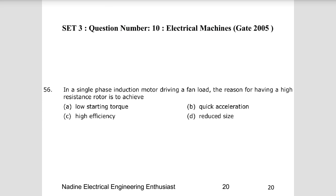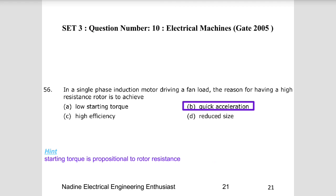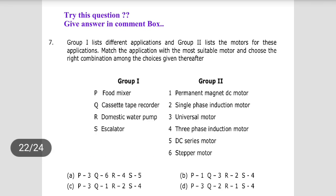Tenth question: in a single-phase motor driving a fan load, the reason for having a high-resistance rotor is to achieve quick acceleration. Starting torque is generally proportional to rotor resistance, so a high rotor resistance gives quick acceleration. This is similar to a slip ring induction motor, which provides high starting torque due to high rotor resistance, whereas a squirrel cage motor has better running performance but lower starting torque.